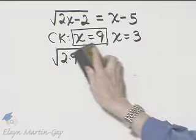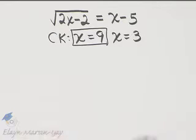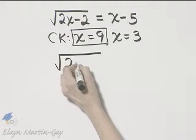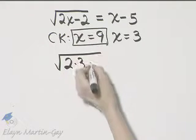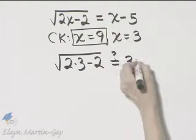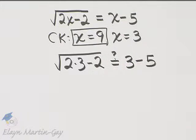Now let's check 3. Once again, original equation and let's let x be 3. That's the square root of 2 times 3 minus 2. Is that equal to 3 minus 5? Well, 2 times 3 is 6. 6 minus 2 is 4.